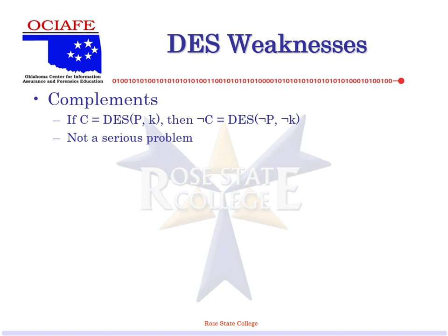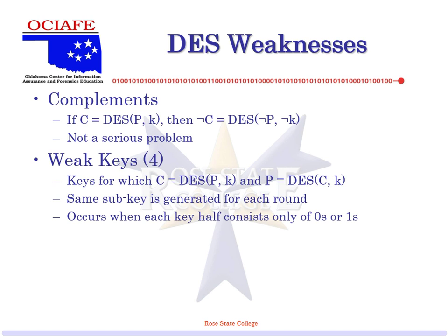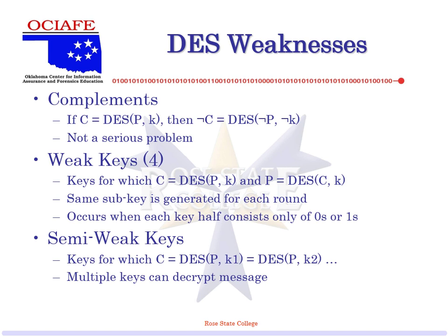Some design weaknesses: key complements — the opposite of the ciphertext is made by the opposite of the plaintext and the opposite of the key. Weak keys: if you come up with a specific key it actually generates weaker output — if your key is all zeros or all ones, for example. Why would someone choose a key that's all zeros or ones? Well, why would the president of Syria choose a password of one-two-three-four-five? People do that all the time.